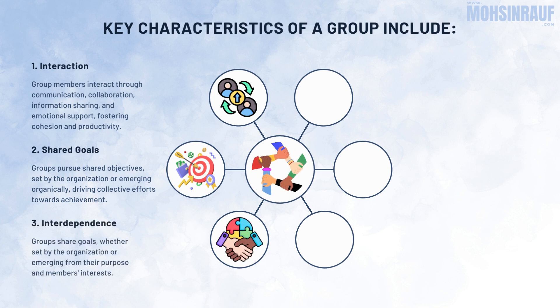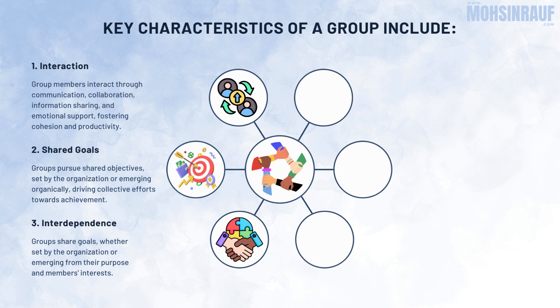3. Interdependence. Members of a group are interdependent, meaning that their actions and decisions are influenced by the actions and decisions of other group members. The success or failure of the group is often contingent upon the collective efforts of its members.